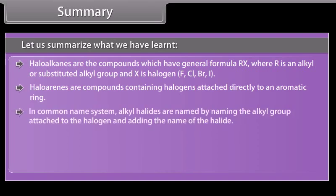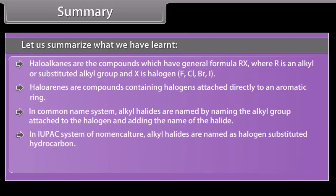In common name system, alkyl halides are named by naming the alkyl group attached to the halogen and adding the name of the halide. In IUPAC system of nomenclature, alkyl halides are named as halogen substituted hydrocarbon.